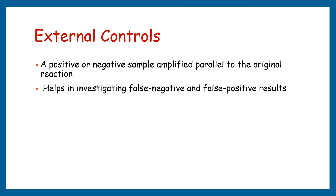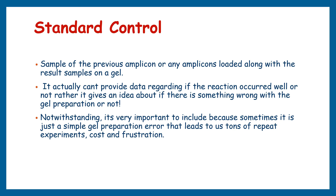A positive or negative sample amplified in parallel to the original reaction is known as an external control, which is similar to the external positive control and helps investigate false positive or false negative results. The standard control is simply a sample of a previous amplicon loaded alongside the result sample on a gel. It cannot provide data on whether the reaction occurred well, but it can identify gel preparation errors — which are important to catch, as a simple gel error can lead to many repeat experiments, cost, and frustration.